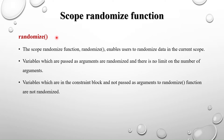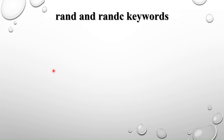Variables which are in the constraint block but not passed as arguments to the randomize function are not randomized. Only the variables present inside the parentheses of the randomize function call will be randomized. If a variable appears only in a constraint block but is not passed as an argument, it will not be randomized.